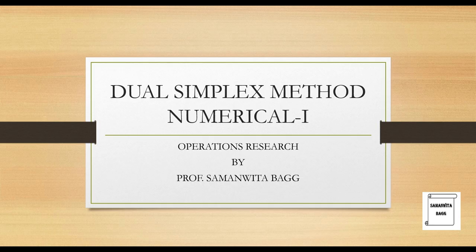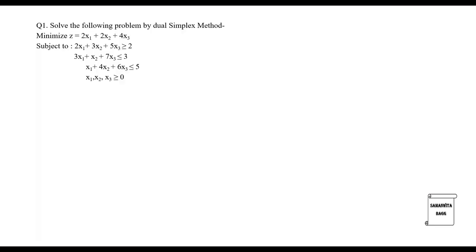Hello everyone, welcome to the next session on operations research. In this session we will take up a numerical on the topic of dual simplex method. Solve the following problem by dual simplex method: minimize z which is 2x1 plus 2x2 plus 4x3, subject to three constraints and a non-negativity constraint. I will solve this problem step-wise.